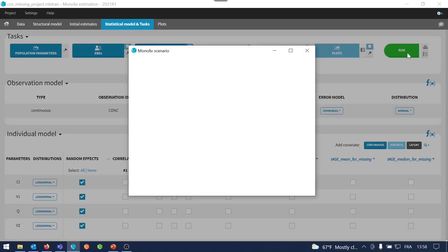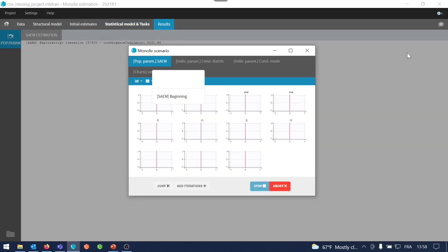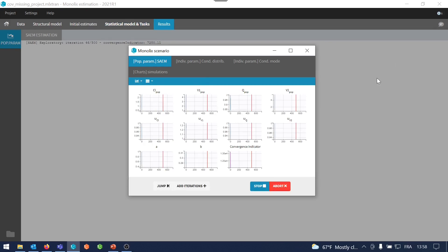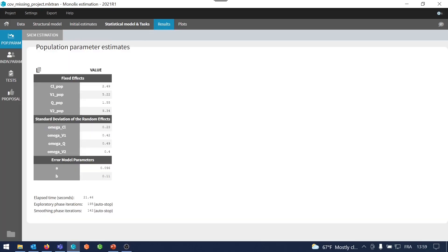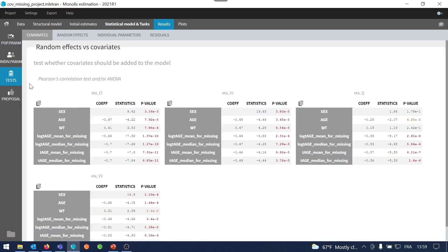And now I run my project and Monolix is going to check if there is a covariate effect of age on one of the parameters in all cases. I see in this case that whatever I use for missing values, the results of statistical tests suggest to add a covariate effect of age on the clearance.